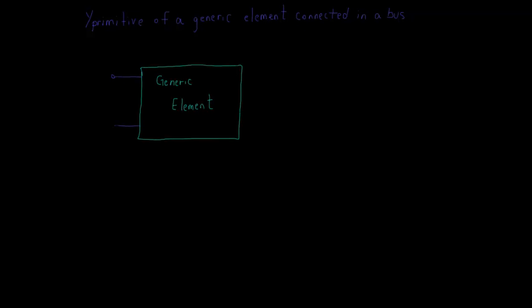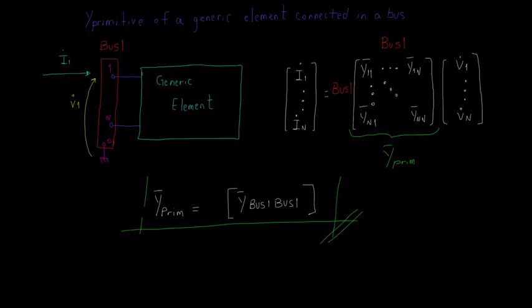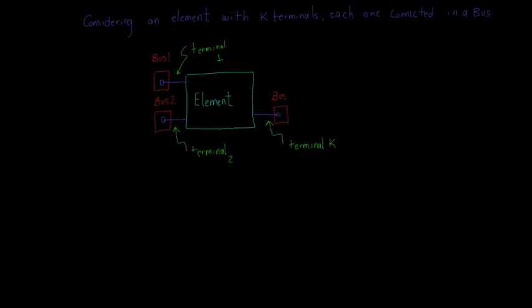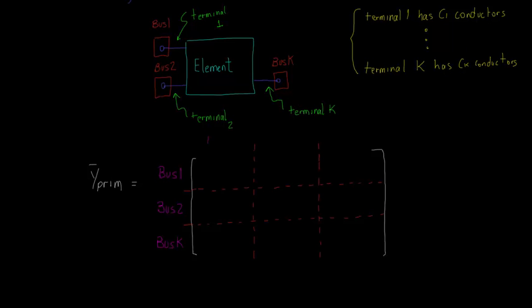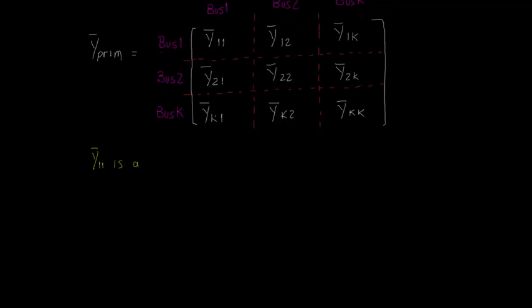Now, let's imagine that our element is connected to a single bus — for example, it could represent a load. In this case, as there is only one bus, the Y-primitive matrix's dimension is N by N, which, keeping the same naming pattern, could be called Y bus1 bus1. The same principle applies for any element. If we consider a generic element with K terminals, with an arbitrary number of conductors each, and by consequence K buses, we can say that the Y-primitive is a K by K matrix and has K times K sub-matrices, where Y11 is a C1 by C1 matrix, Y12 is a C1 by C2 matrix, Y21 is a C2 by C1 matrix, and so on.